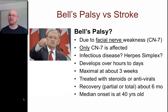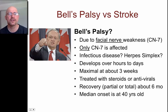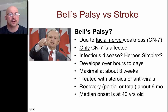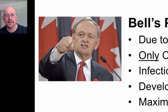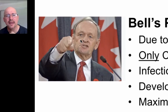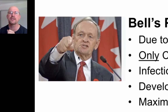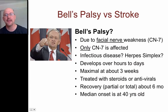Recovery typically takes about six months, and the median onset happens in older people, around 40 years old. I have a picture here of Jean Chrétien, who was Canada's prime minister — hence the Canadian flag and the little Canadian poppy. If you take a look at his face, you can see a wider palpable fissure on one side, a missing nasolabial fold on that side, and obvious weakness to the right side of the face — right-sided Bell's palsy. Unfortunately, he didn't recover entirely, so this is now chronic for him.